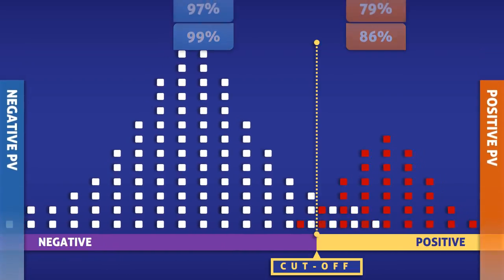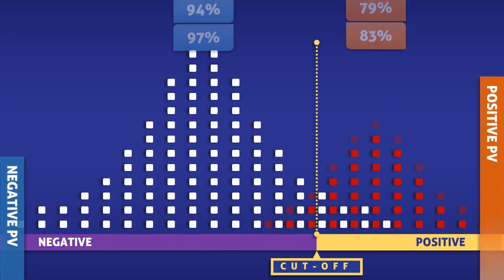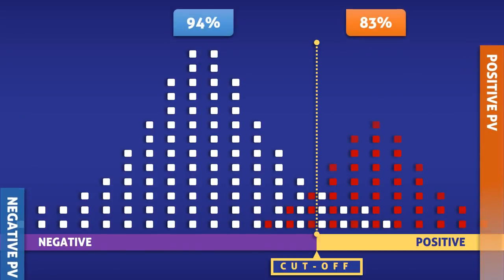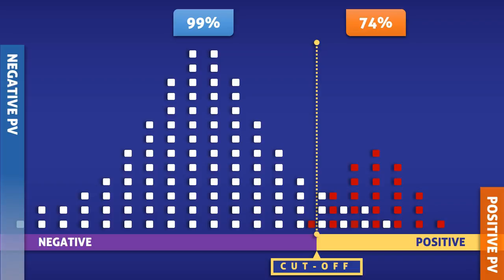Now let's reset the amount of overlap so that we can visualize the effect that changes in prevalence have on both values. As the prevalence increases, the positive predictive value goes up, but the negative predictive value goes down. This makes sense, because the more people that have a condition, the more likely a positive test is going to be true. As the prevalence decreases, the negative predictive value goes up, but the positive predictive value goes down. This makes sense, because the fewer people that have a condition, the more likely a negative test is going to be true.